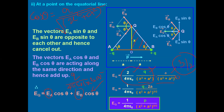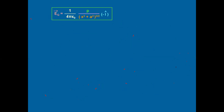This is the magnitude of the electric field, and its direction is opposite to that of the dipole moment p. In vector form: Eq⃗ = (1/4πε₀) · p / (x² + a²)^(3/2) · (−î). Here also, as we did for the previous derivation, we can consider the special case for an ideal dipole.